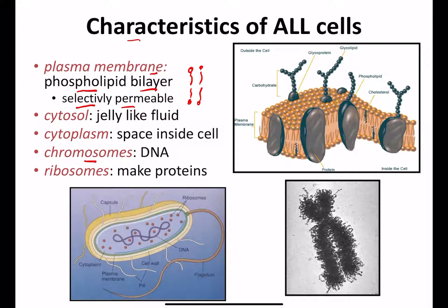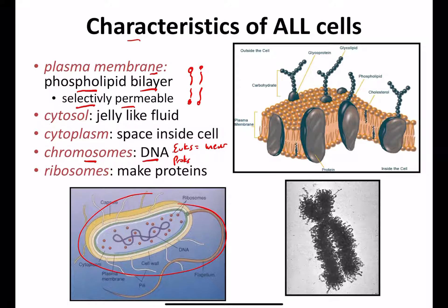Key characteristics to differentiate between prokaryotes and eukaryotes: the DNA in eukaryotes is going to be linear and for prokaryotes it's circular. Regardless, both are made up of DNA — deoxyribonucleic acid — and they both have ribosomes, which are the key thing to help make proteins and protein synthesis. Ribosomes are a little bit smaller in prokaryotes than in eukaryotes.